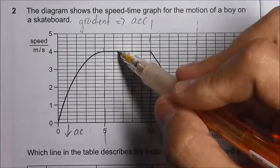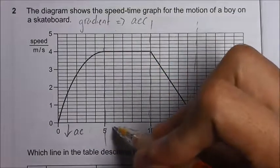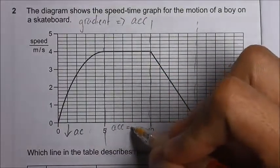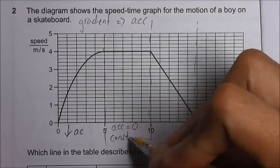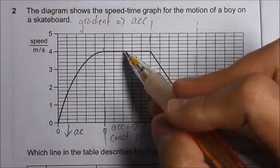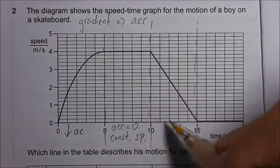From 5 to 10 seconds, you can see that the graph is flat, is horizontal, so the gradient is 0. That means acceleration is 0 and it should be traveling at constant speed of 4 meter per second.